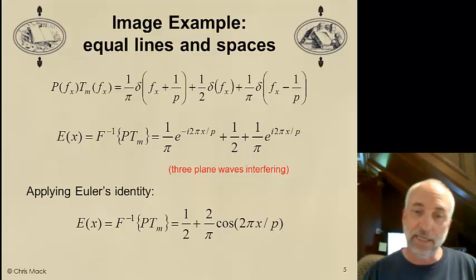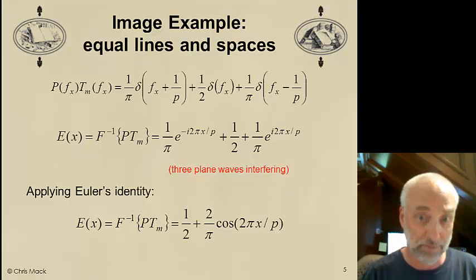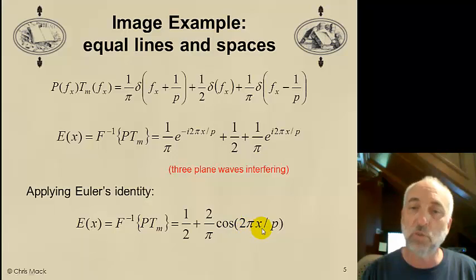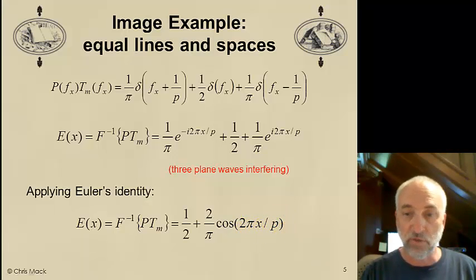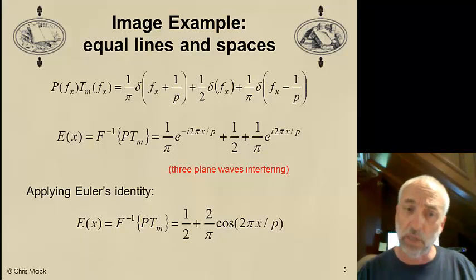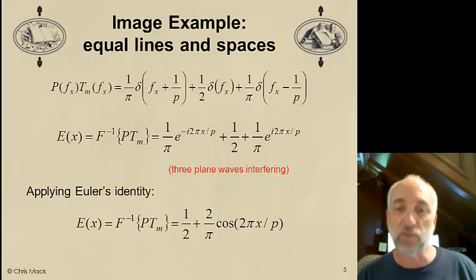Now, we can apply Euler's identity. I've got an e to the plus i times the quantity added to e to the minus i times the quantity. And that is nothing more than two times the cosine. So I replace those things with two times the cosine, and I have my answer now in a very simple form, one-half plus two over pi cosine two pi x over p, where p is the pitch of the pattern. And sure enough, that results in an image with a period equal to the pitch on the mask.